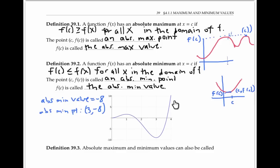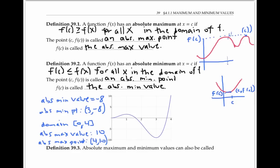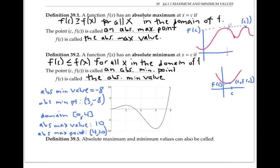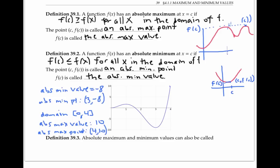If this function stops here and just has a domain from zero to four, then the function has an absolute maximum value of 10 at the absolute maximum point with coordinates (4, 10). If the function keeps going in this direction, it will not have an absolute maximum value at all. Absolute maximum and minimum values can also be called global maximum and minimum values.